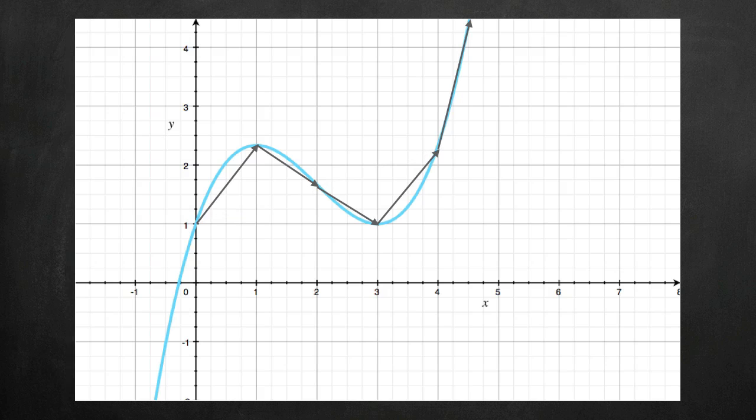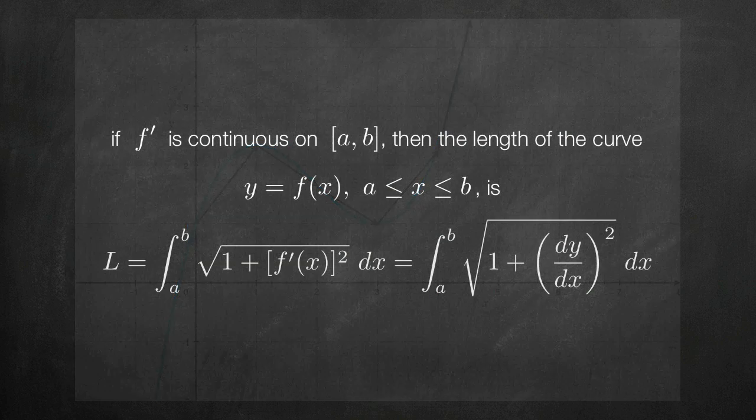The more line segments we use, the more accurate our estimate will be. Therefore, what that tells us is that if we want an accurate value for arc length, we need to use an infinite number of line segments to measure the length. When we do that, our formula for arc length on the interval x equals a to x equals b looks like this.